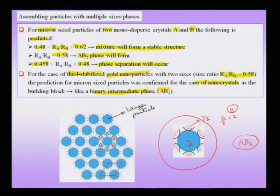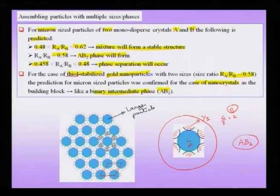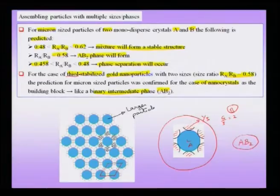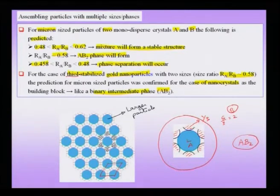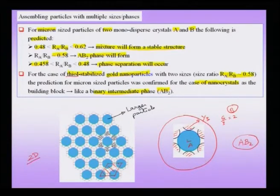In this schematic, the thiol molecules have not been shown, but it is essential that gold nanoparticles be stabilized with thiol. Otherwise, these particles may sinter and the ordered structure will not form. This is a 2D crystal with a unit cell now in the nanoscale regime.